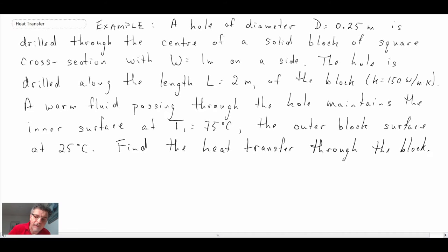So there's our problem statement. It's kind of a long one, but what we have is a hole drilled through the center of a solid block of square cross-section. The dimensions of the square cross-section are one meter by one meter on a side. The hole is drilled along the length, so the length of this square cross-section is two meters long.